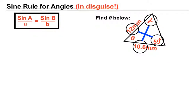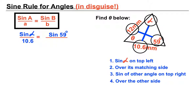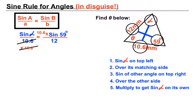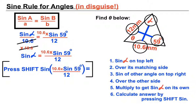We put sine alpha on the top left over its opposite side, 10.6. Then sine 59 degrees on the top right over its related side, 12 mm. We multiply both sides by 10.6, leaving sine alpha on its own. Then we type the right-hand side carefully into the calculator and press shift sine and equals to find the angle. Alpha is opposite a slightly smaller side than 59 degrees produces, so we expect a slightly smaller angle.